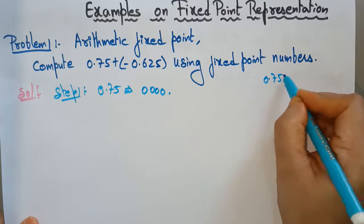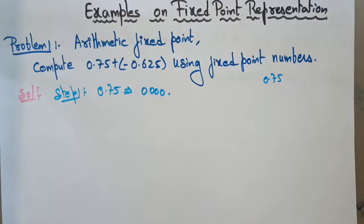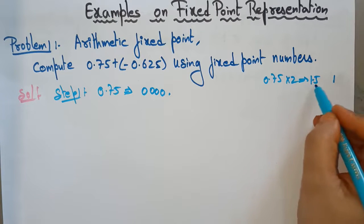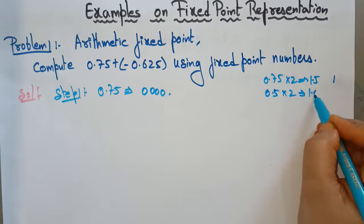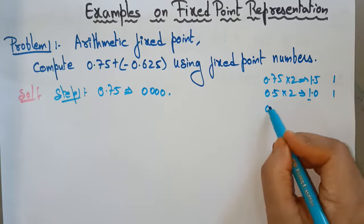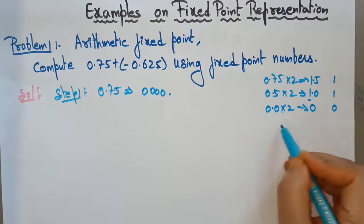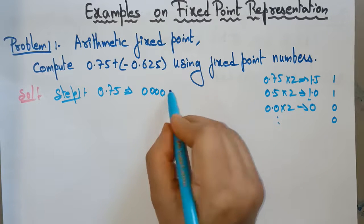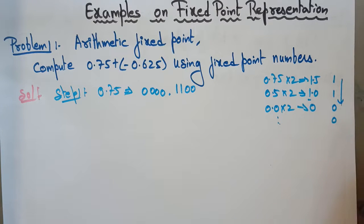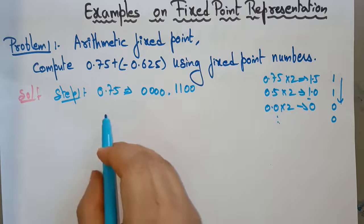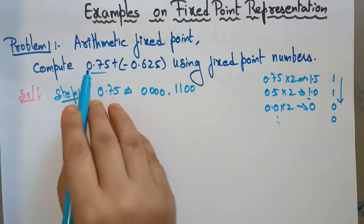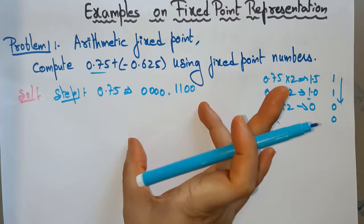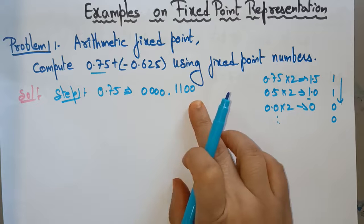Now calculate 0.75 — convert it into binary. 0.75 times 2 gives 1.5, so take the integer part 1. The remaining fraction 0.5 times 2 gives 1.0, take integer part 1. Then 0.0 times 2 gives 0, integer part 0, and so on. So the fraction part of 0.75 is 1, 1, 0, 0 — reading top to bottom. Using 8-bits with 4 bits for integer and 4 bits for fraction, the representation is 0000.1100.